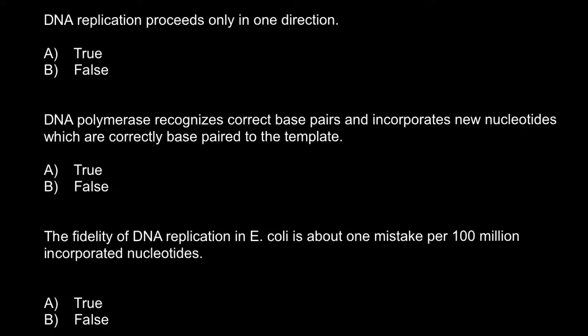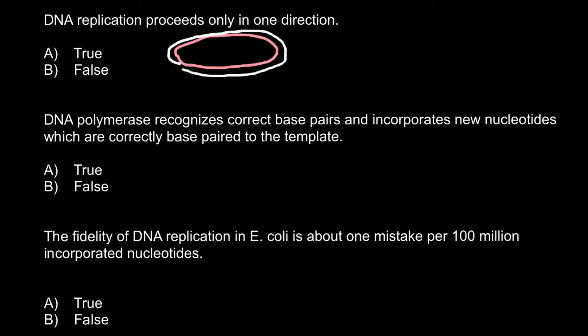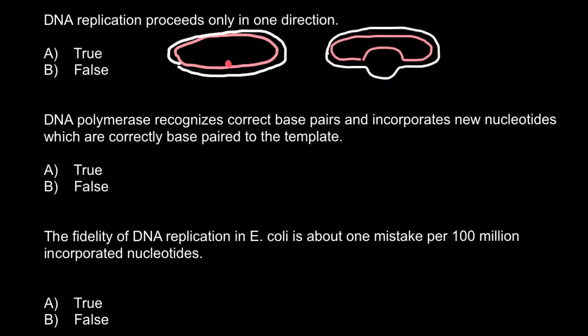If you don't know how to answer this question, here is my explanation. Imagine that this is a bacterial chromosome. Bacteria have a circular chromosome and of course it is double stranded, so here are the two strands of this circular bacterial chromosome. Here we have the point of replication where replication starts, and here is a picture of what we might see after replication starts — we would see a replication bubble, and this replication bubble would grow in two directions.